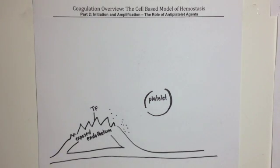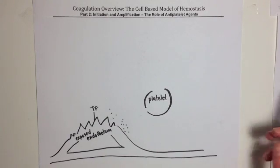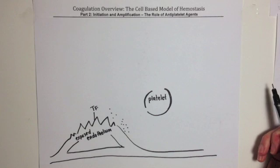Welcome back to our series on the cell-based model of hemostasis. This is part two of four, where we will discuss initiation and amplification and connect these steps with the antiplatelet agents we use for the treatment of acute coronary syndromes.